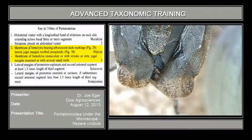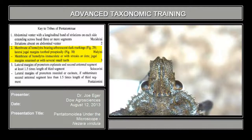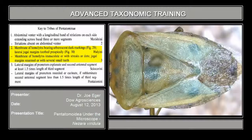Couplet number two: membrane of hemelytron bearing arborescent dark markings, and jugal margins toothed preapically. You can see the dark arborescent markings here — these are found only in the New World genus Brocimia, in the tribe Hyalinae. There are now two genera: Parabrocimia and Brocimia, both with those arborescent markings. On the head there's usually a preapical tooth. Our bug doesn't have either of these — the membrane is clear and there's no preapical tooth on the jugal margin; it's just rounded.